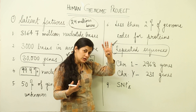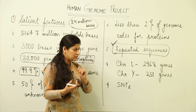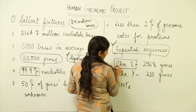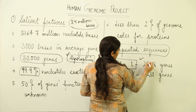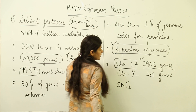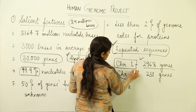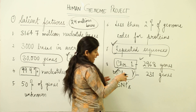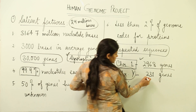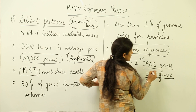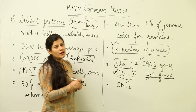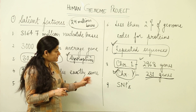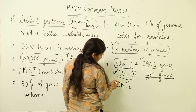Chromosome number 1 has the highest number of genes — as many as 3,000 genes. Chromosome Y, found in males alongside one X chromosome, has the lowest number of genes: only 231 genes, which are responsible for giving a human being the characteristics of a male.